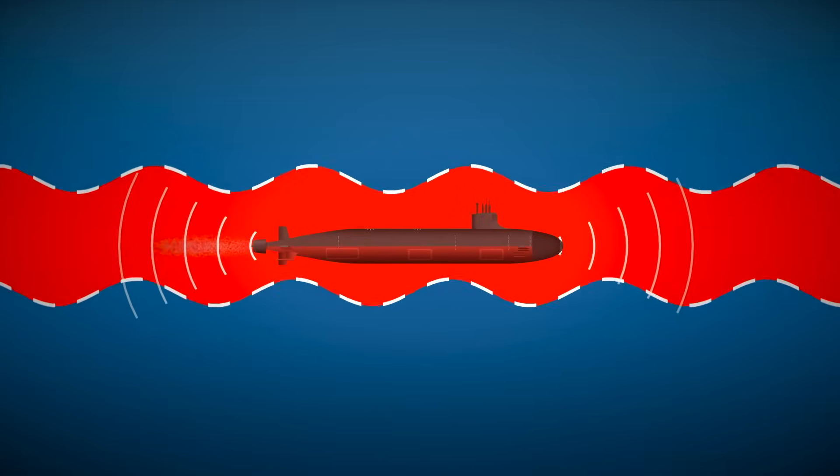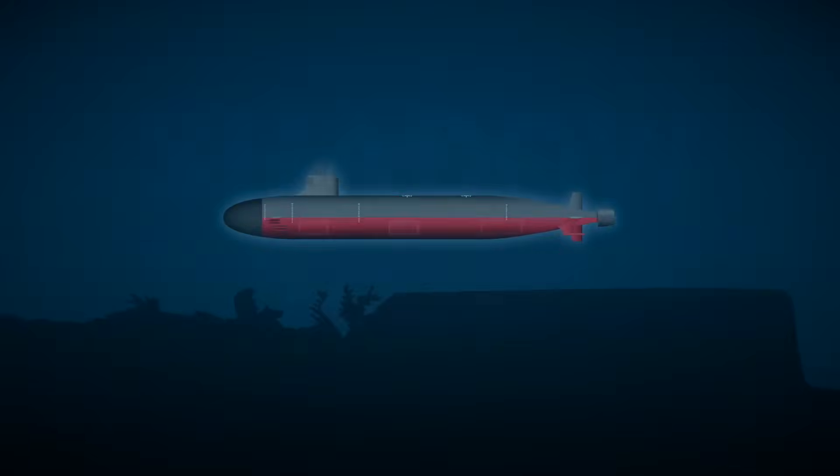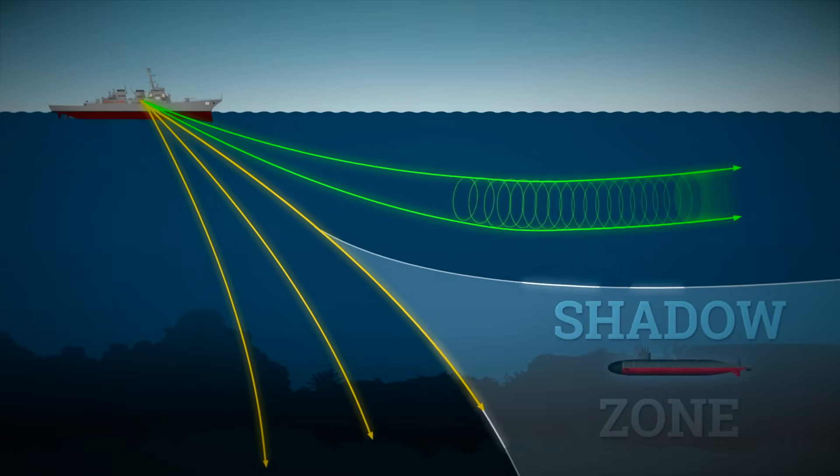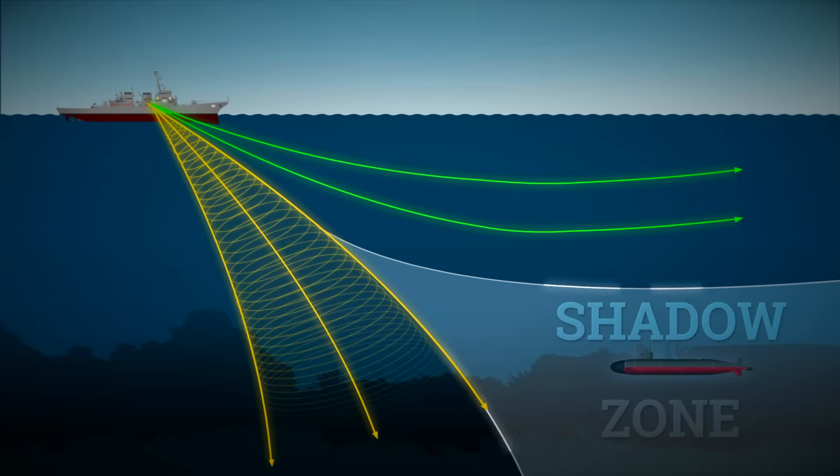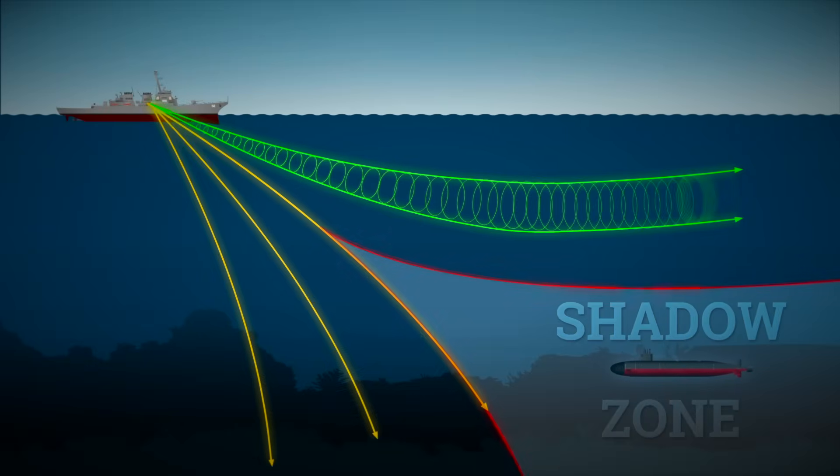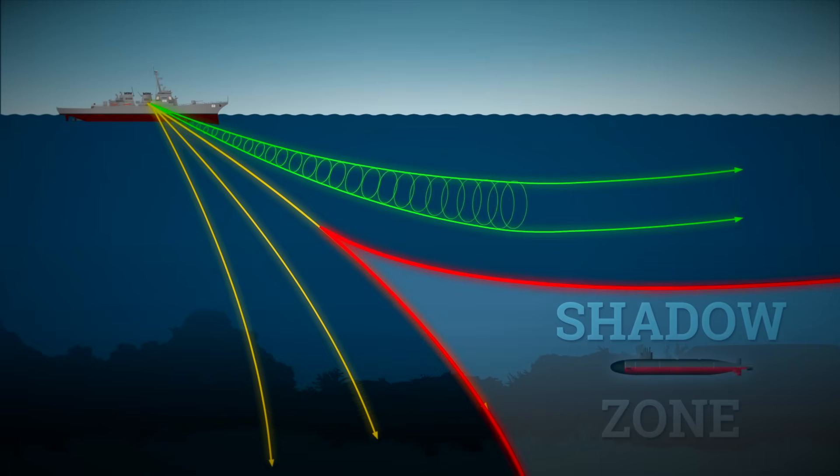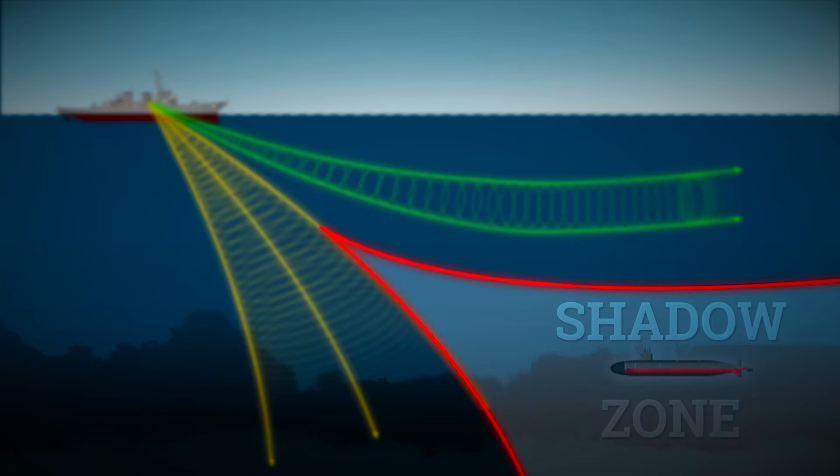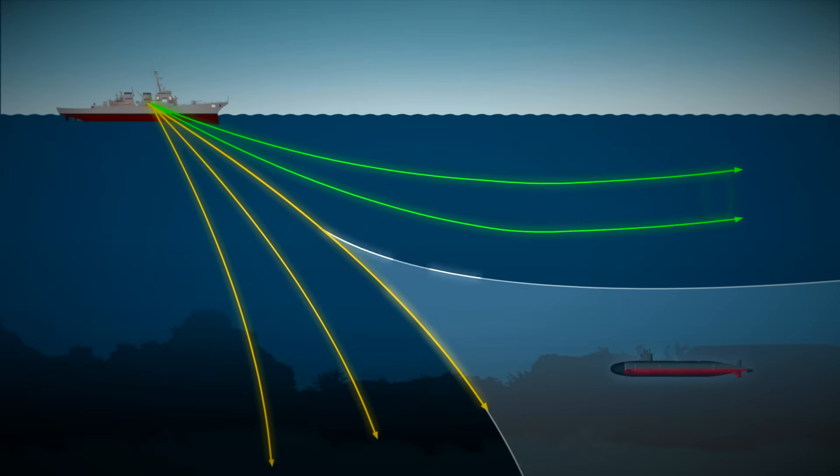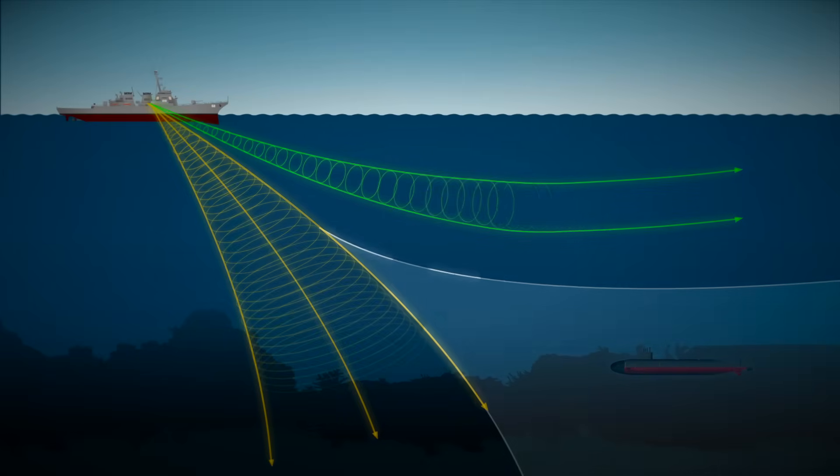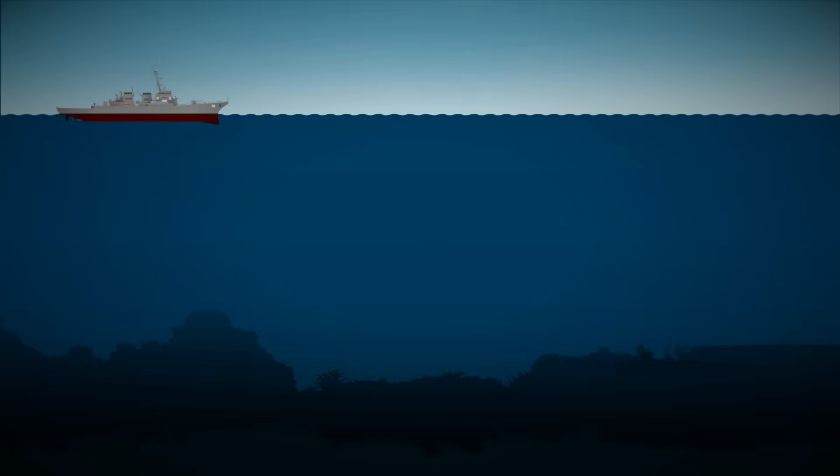Then there are shadow zones, regions where the sound, due to refraction, simply doesn't reach. Like light getting blocked by an object, these zones are acoustic blind spots. By studying the SVP and ocean topography, submarines can hide in these zones to avoid being detected.